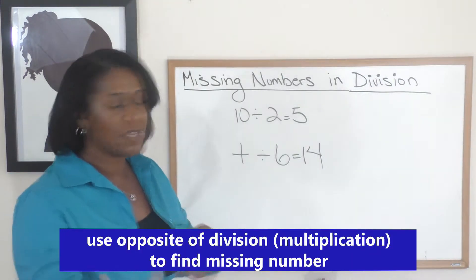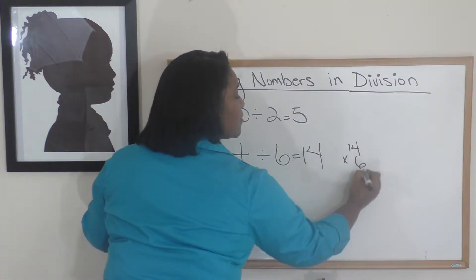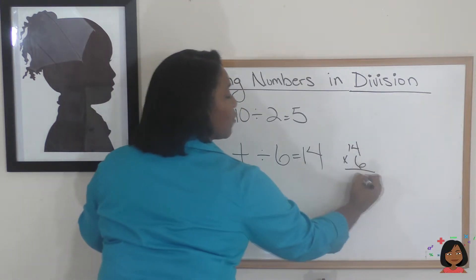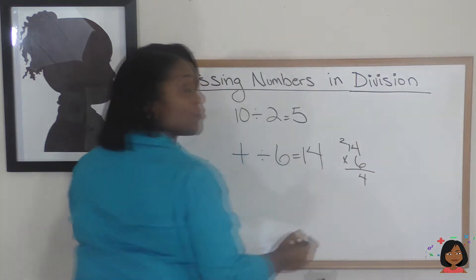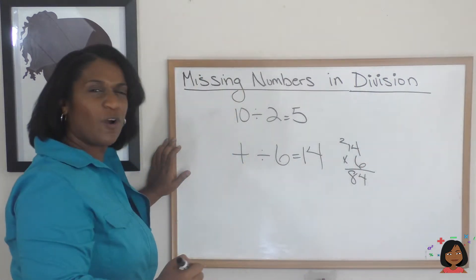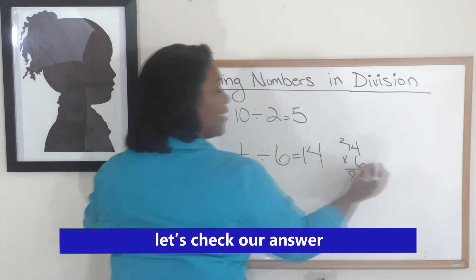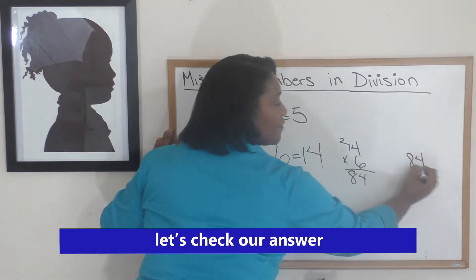Same kind of problem—we're trying to find our dividend. We can use multiplication. So let's do it: 14 times 6. 6 times 4 is 24, 6 times 1 is 6, plus 2 is 8. So we have 84.